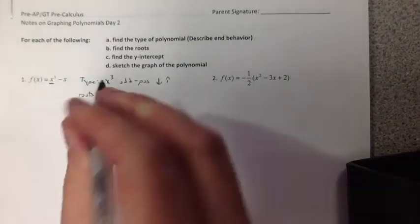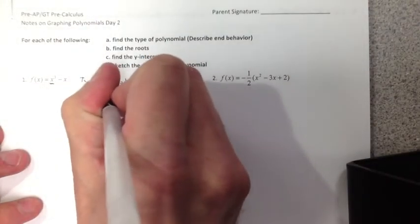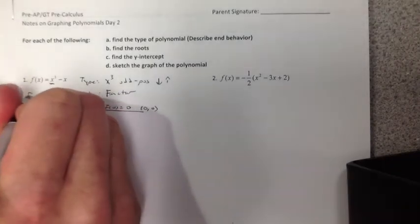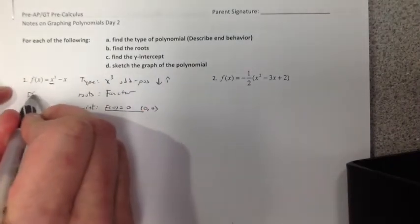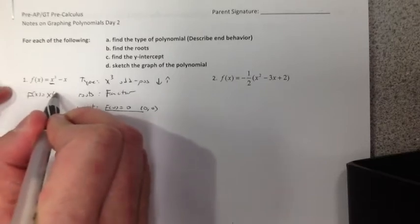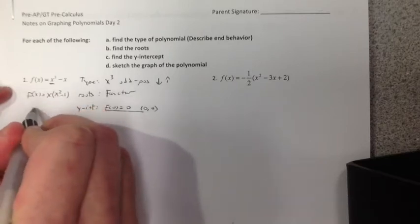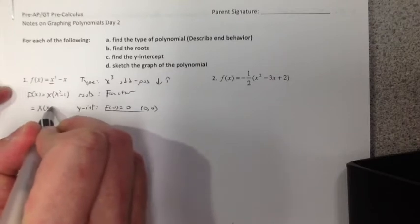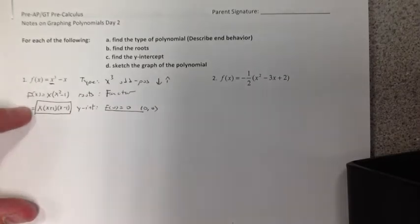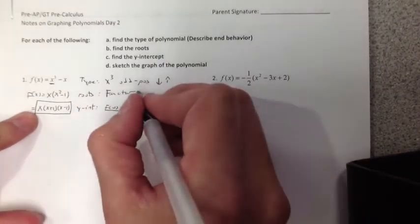Next, we're going to find the roots. Now to find the roots, we do have to factor. If I factor this, I get x. If I factor f(x), we can factor out an x. And that's going to leave us with x² - 1. Of course, I can factor some more. I get (x + 1)(x - 1). This is the factor form.